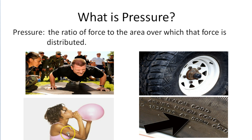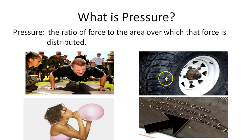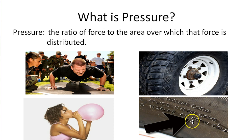If we take a look at this girl blowing up the balloon, once again as she blows into this balloon, those air molecules are going to be exerting a certain amount of pressure over the inside of this balloon. Same with the tire right here — there's air in this tire and that air is exerting a certain amount of pressure over the walls that line the inside of this tire. And this last picture shows you that the sidewall of a tire will actually indicate the maximum number of pounds per square inch that a tire should be inflated to.